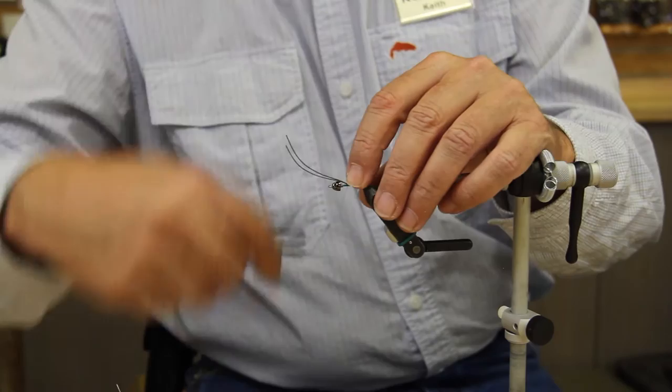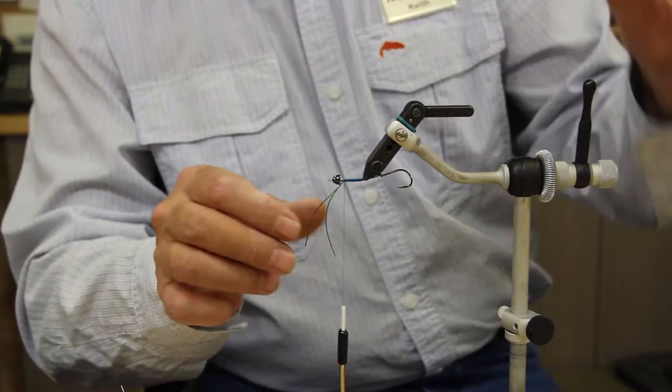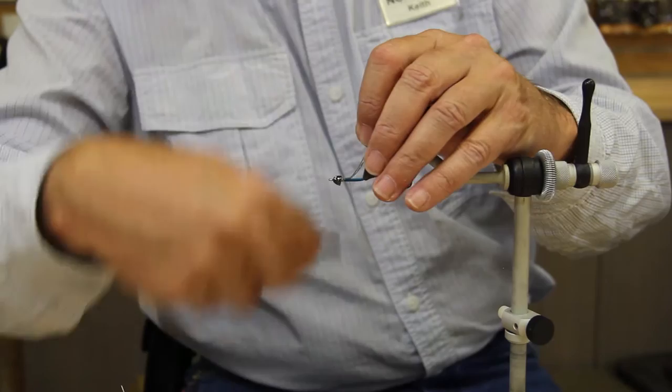And we're going to wrap our thread almost to the front, and leave just a little bit of space so we don't crowd the head too much. And then what I do is turn it over and I bend each piece of the braid back. What that does is it gives me kind of an even body.